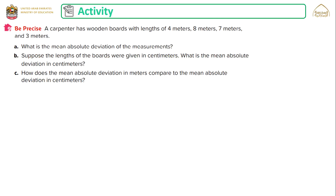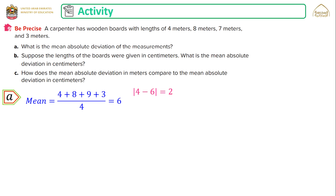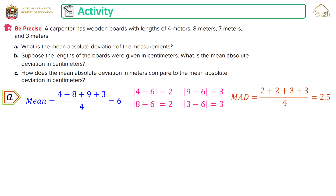A carpentry problem: wooden parts have lengths of 4 m, 8 m, 7 m, and 3 m. Part a: find the mean absolute deviation. Adding the values and dividing by 4 gives the mean. The absolute differences are 2, 2, 3, and 3. The mean absolute deviation is (2+2+3+3) ÷ 4 = 2.5.